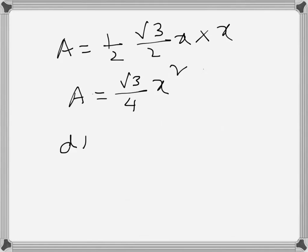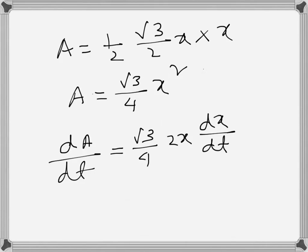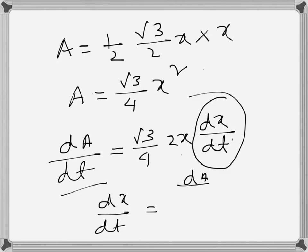Now if I differentiate with respect to time, dA/dt equals √3/4 times 2x times dx/dt. We need to find this one, the rate of change of side. The other things are given: dA/dt is given, X is given. So let's just rearrange.